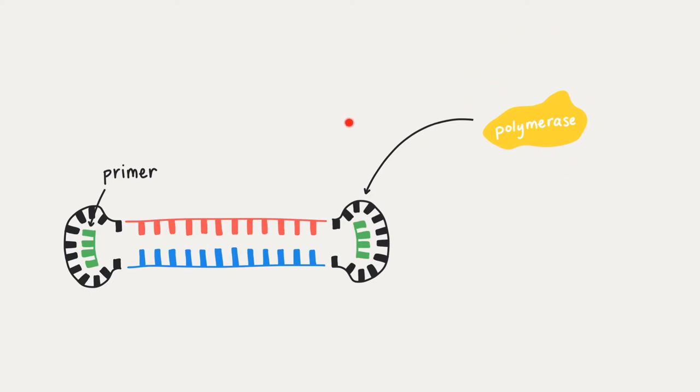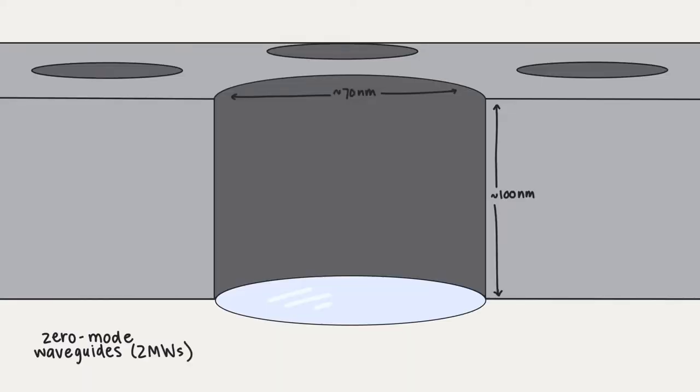Next, we add the polymerase that attaches to the annealed primer sequence. Then the sample is ready to load onto a SMRT cell. The DNA library and polymerase are loaded onto a SMRT cell which contains zero-mode waveguides, or ZMWs.